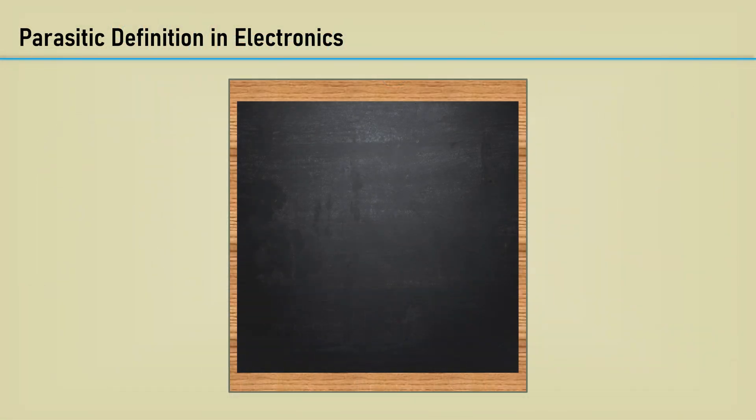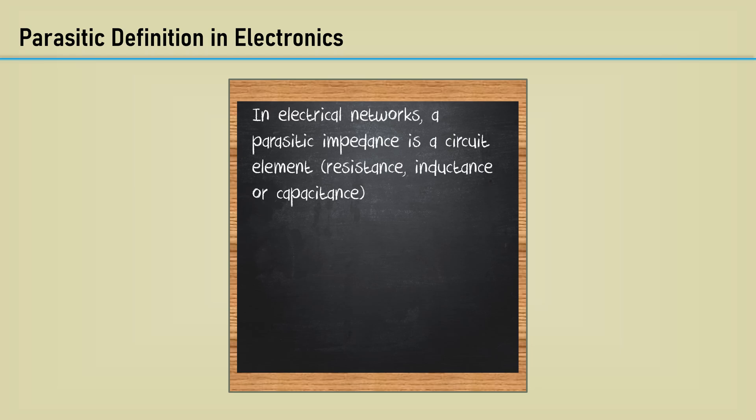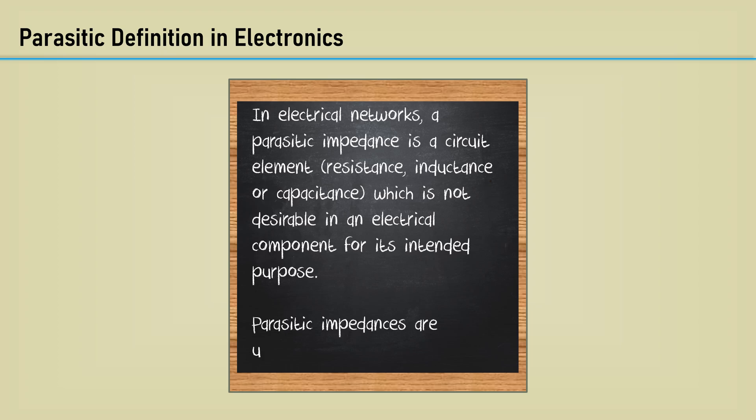First, let's talk about the definition of parasitics in electronics. In electrical networks, the parasitic impedance is a circuit element - resistance, inductance, or capacitance - which is not desirable in an electronic component for its intended purpose. Parasitic impedances are unavoidable.